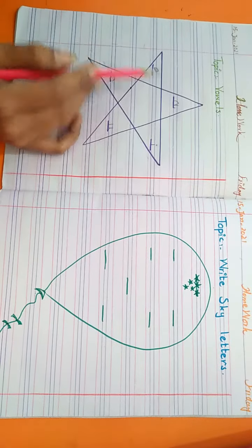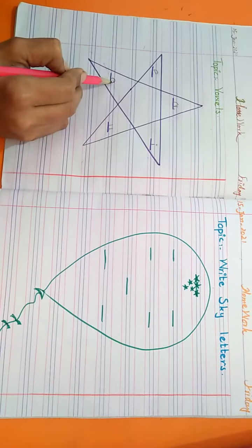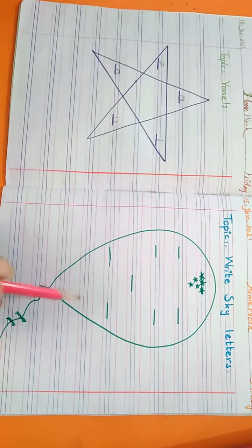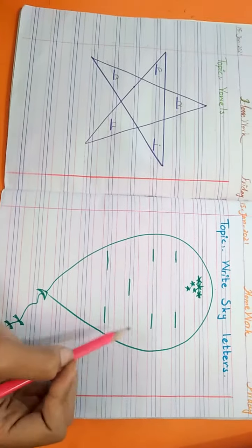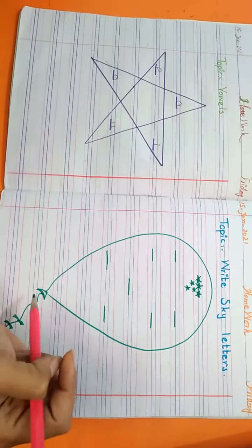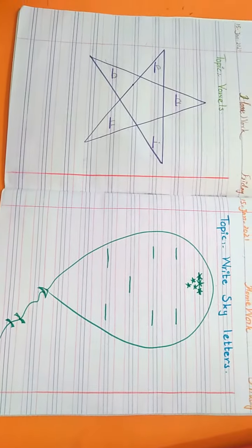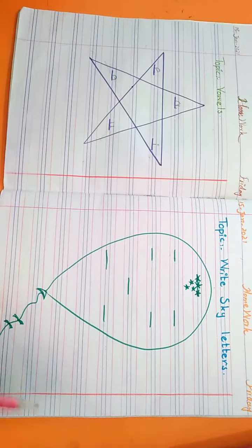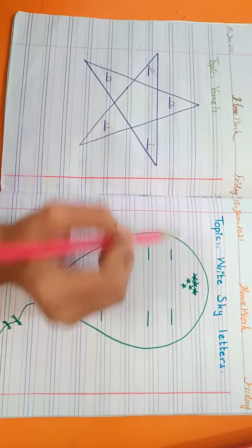A, E, I, O, U. These are called vowels. Here we write sky letters. Sky letters are in seven number. You can see a beautiful balloon. Balloons fly in the sky, so we write sky letters in balloon.